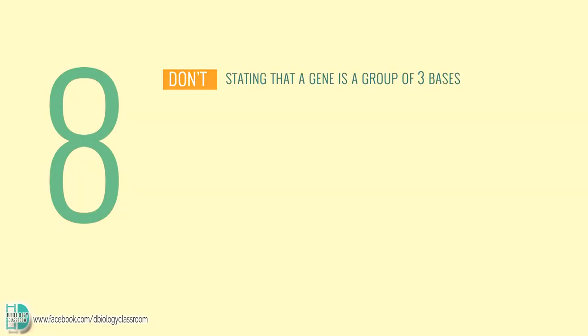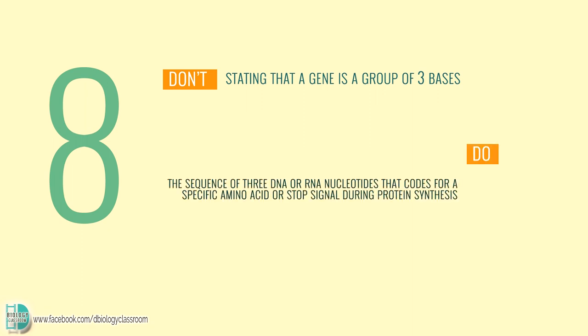Number 8: stating that a gene is a group of three bases. The sequence of three DNA or RNA nucleotides that codes for a specific amino acid or stop signal during protein synthesis is known as a codon.